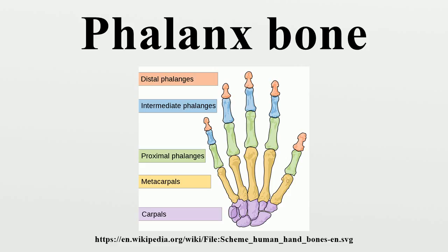Structure: the phalanges are the bones that make up the fingers of the hand and the toes of the foot. There are 56 phalanges in the human body, with 14 on each hand and foot. Three phalanges are present on each finger and toe, with the exception of the thumb and large toe, which possess only two. The middle and far phalanges of the fourth and fifth toes are often fused together.